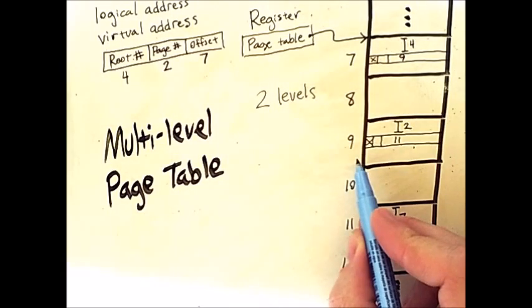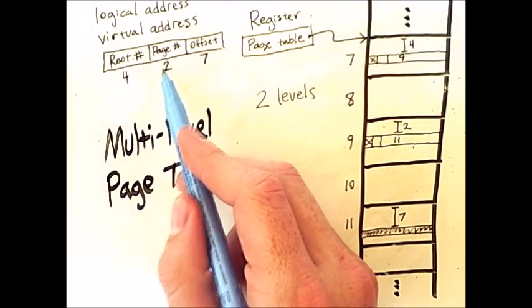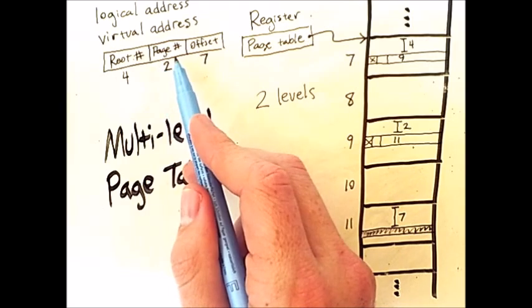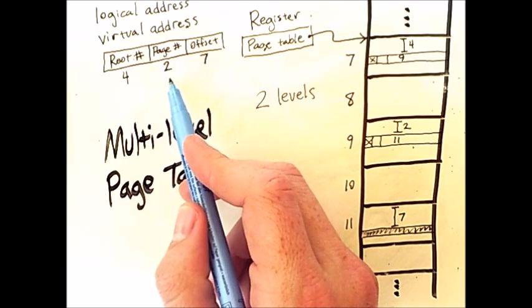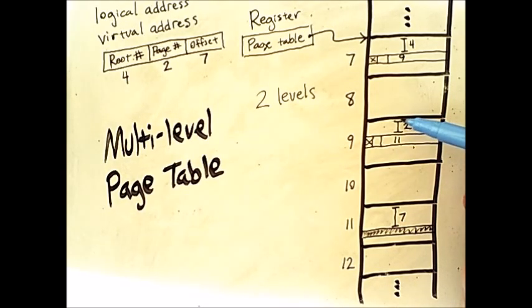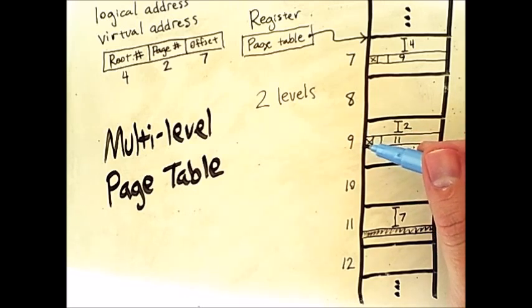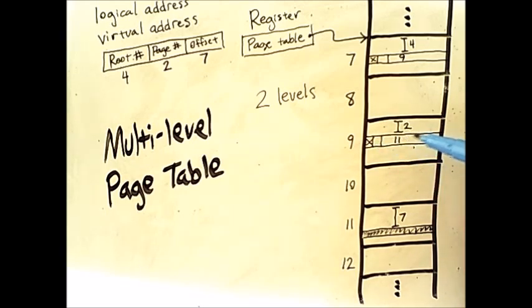So I go to frame nine. Now I look at the next number in my virtual address. This is the second page number, and it is two. So I will add two to the beginning of frame nine to get the entry there, which is 11. So what I have here in frame nine is not a page of the process, but rather another page table, a sub-page table, if you will. And by accessing this entry, I have finally found frame 11, which contains the actual page of the process.